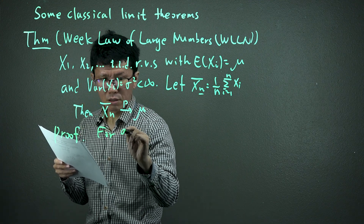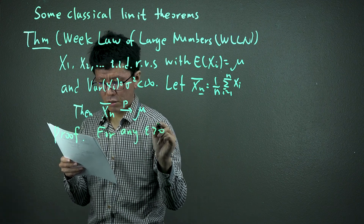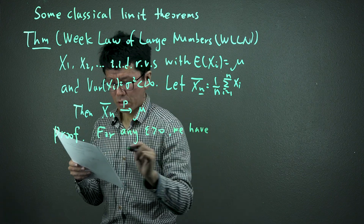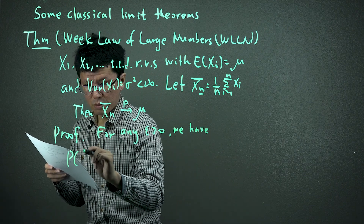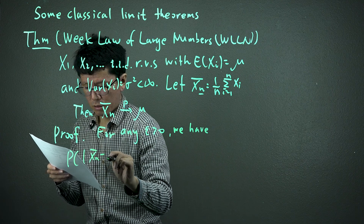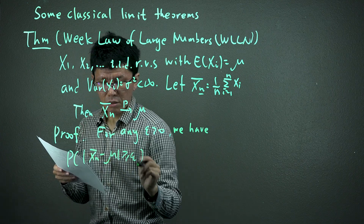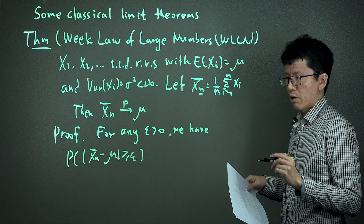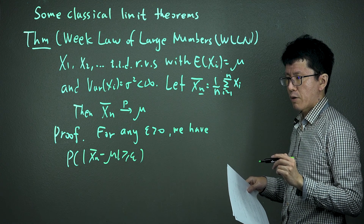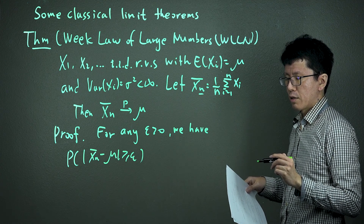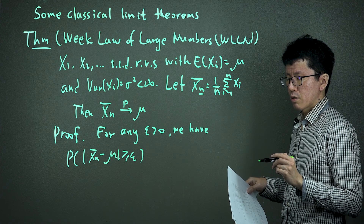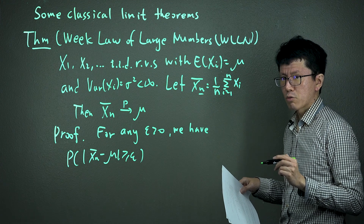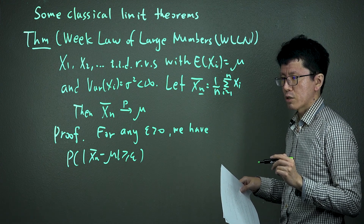Proof: We want to show that the probability of the absolute distance between X-bar_n and mu being greater than or equal to epsilon is approaching zero as n goes to infinity. That's the definition of convergence in probability.